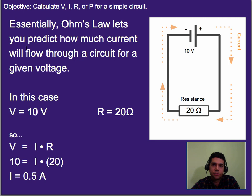So essentially, Ohm's Law lets us predict how much current will flow through a circuit, given a certain amount of voltage. So for example, if we have a 10 volt battery connected up to a 20 ohm resistor, we know these two things as our given information. So we plug in 10 volts and 20 ohms in this case. And we can solve and figure out that 0.5 amps of current will flow through, meaning 0.5 coulombs of charge will flow through any point within one second.